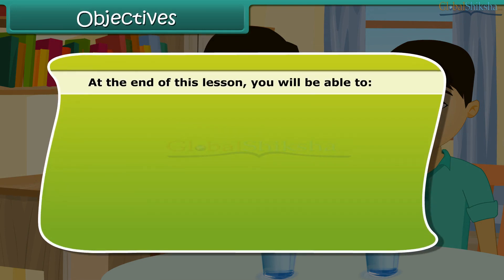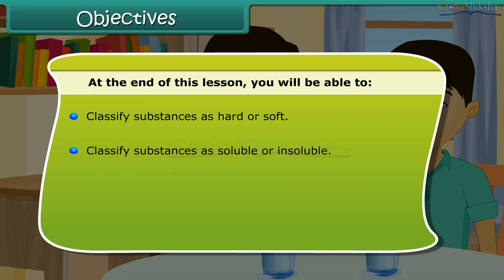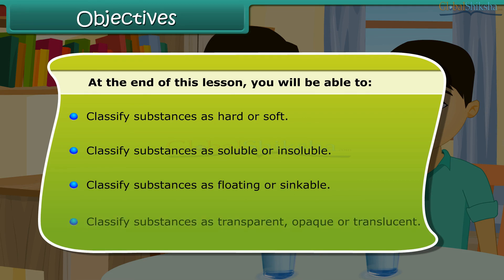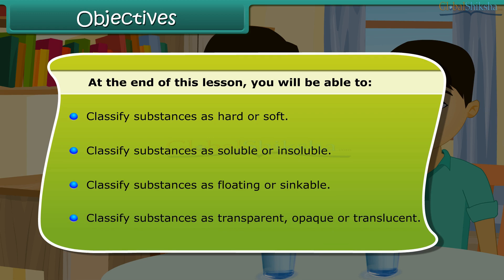At the end of this lesson, you will be able to classify substances as hard or soft, classify substances as soluble or insoluble, classify substances as floating or sinkable, and classify substances as transparent, opaque, or translucent.